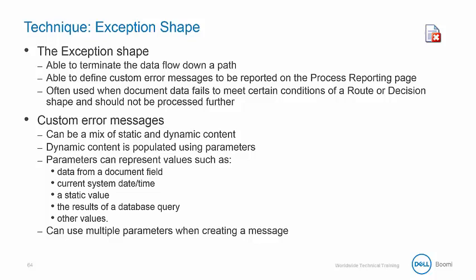As we saw in the demonstration, the Exception shape can be used to terminate the data flow down a path. It can define custom error messages in process reporting and in email alerts, and it's often used with the Route or Decision shape when a document does not meet specific criteria.